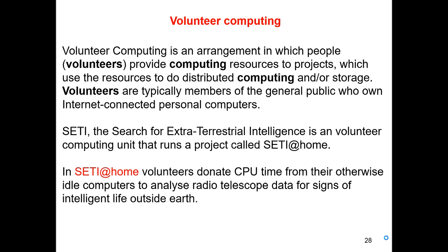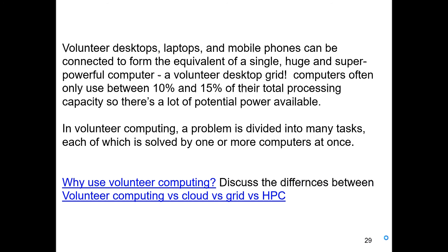Volunteer computing can use any kind of computational resource — a desktop, laptop, mobile phone, or anything connected to the internet with considerable computational power. It uses somewhere around 10 to 20 percent of the total processing capacity of the device. The volunteer computing model takes a problem, divides it into many tasks, and those tasks are solved by many computers connected to that particular grid.